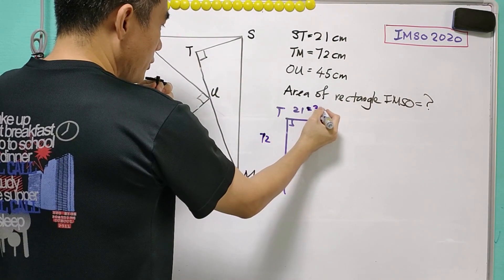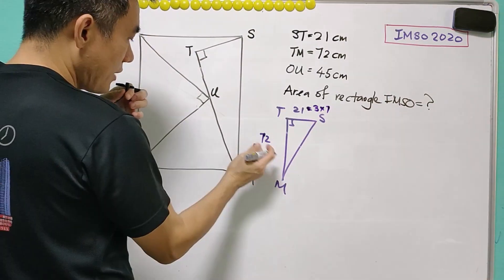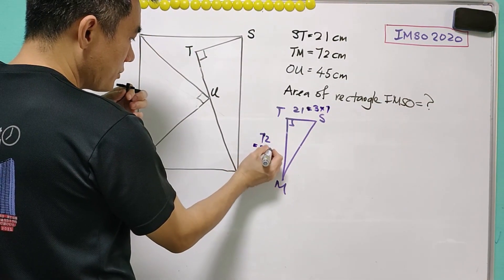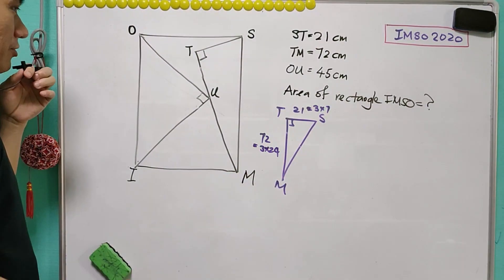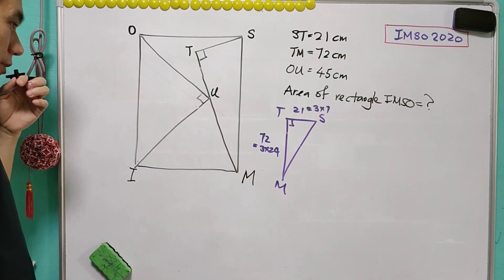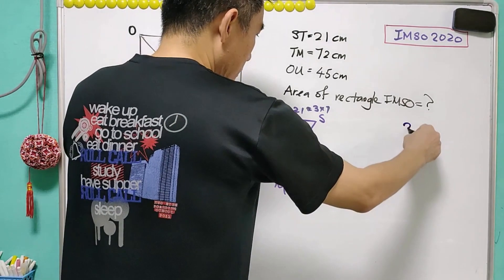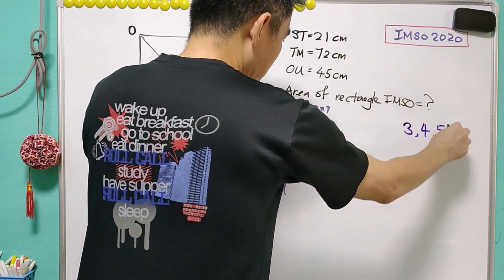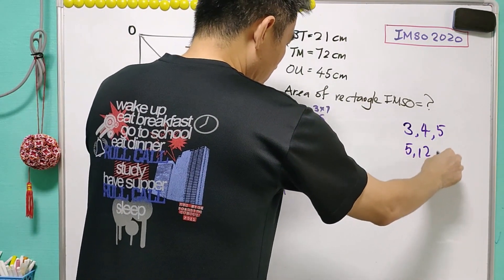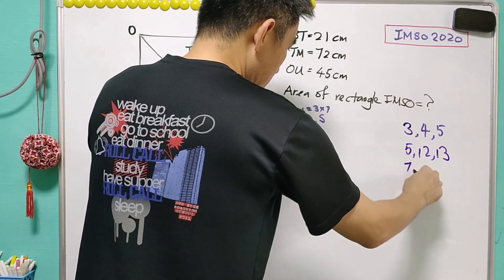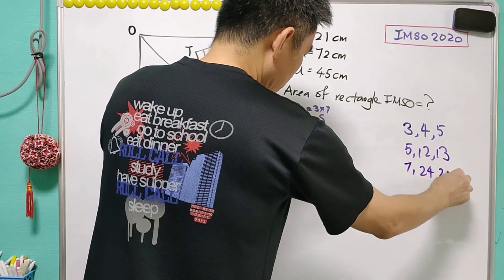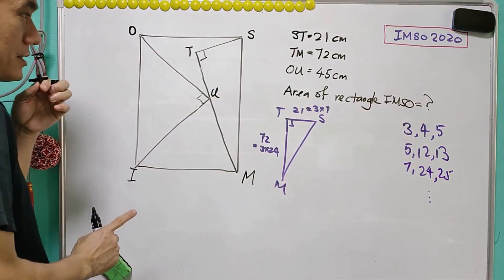21 equals 3 times 7, 72 is 3 times 24. We have to be familiar with some Pythagorean triples: 3-4-5, 5-12-13, 7-24-25, and so on. In this case, we are going to use this set 7-24-25.